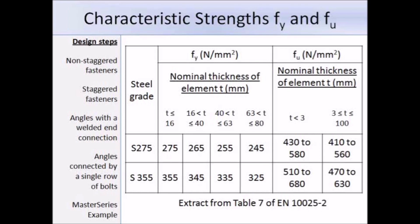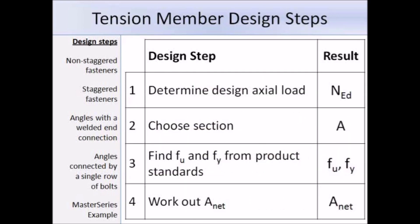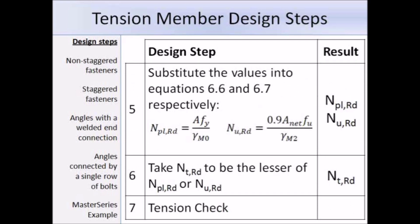Here is a brief summary of the design steps for a tension member. Step 1: determine the design axial load. Step 2: choose a section and obtain the gross area. Step 3: find the yield strength and ultimate tensile strength from the product standards. Step 4: work out the net area, making deductions for fastener holes if present. Step 5: calculate N_pl,Rd using expression 6.6 with the gross area, yield strength, and γM0 = 1.0; and calculate N_u,Rd using expression 6.7 with the net area, ultimate tensile strength, and γM2 = 1.25. Step 6: take the lesser of the two resistances. Step 7: compare resistance to the design load.